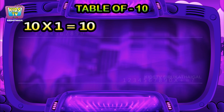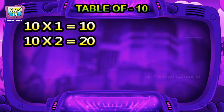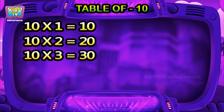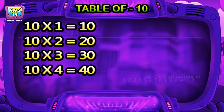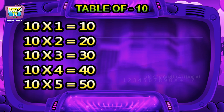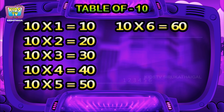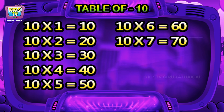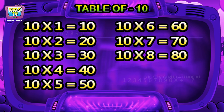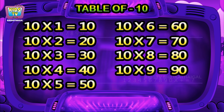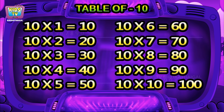Ten ones are ten, ten twos are twenty, ten threes are thirty, ten fours are forty, ten fives are fifty, ten sixes are sixty, ten sevens are seventy, ten eights are eighty, ten nines are ninety, ten tens are one hundred.